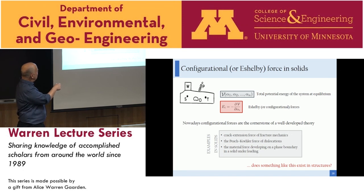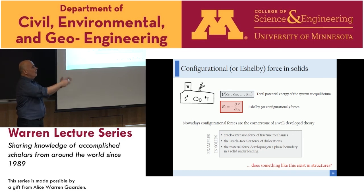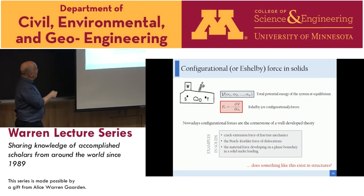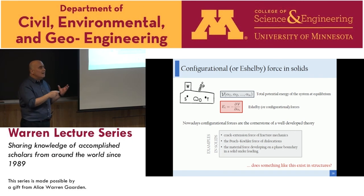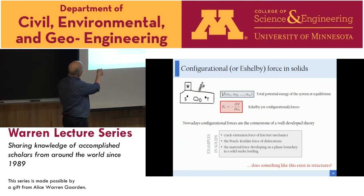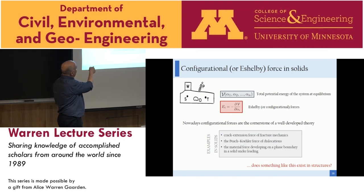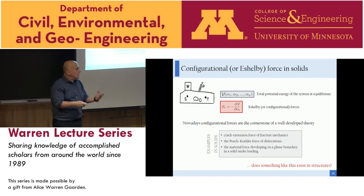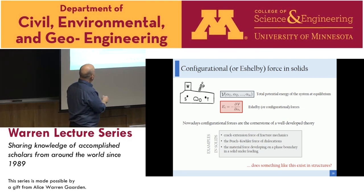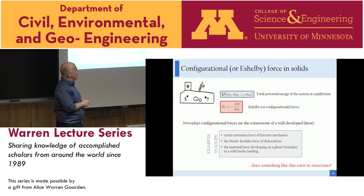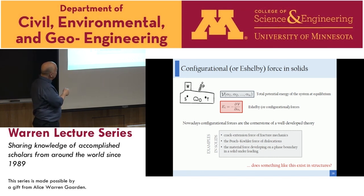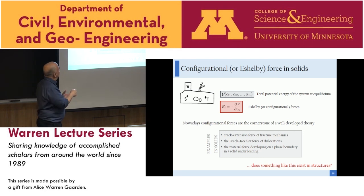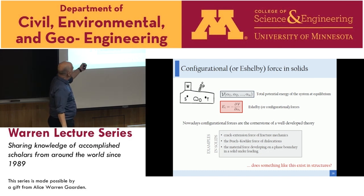We start with a famous sketch from a paper by Jock Eshelby, showing an elastic solid with generic boundary conditions — a weight W, a spring of stiffness P, and defects inside the body sketched as cavities and points representing dislocations or cracks. Eshelby's idea was to write down the total potential energy of the system at equilibrium as a function of configurational parameters defining the defects — for instance, the length L of a crack.